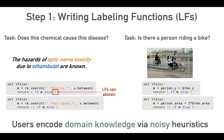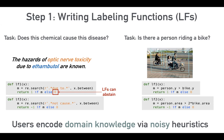Again, these are all examples of how users are able to encode their domain knowledge via noisy heuristics. The second step, once users have worked on their labeling functions, is to model and combine the outputs of these labeling functions to create the training labels we're looking for.